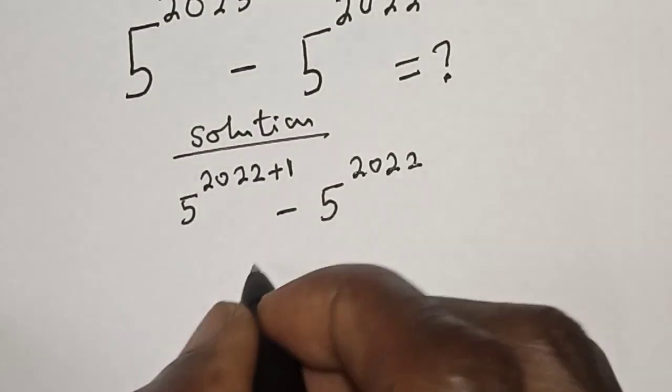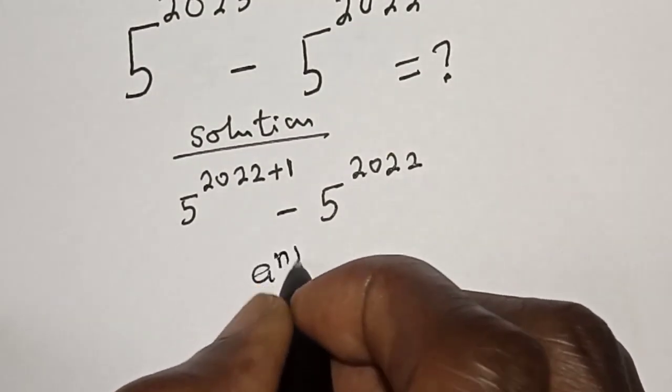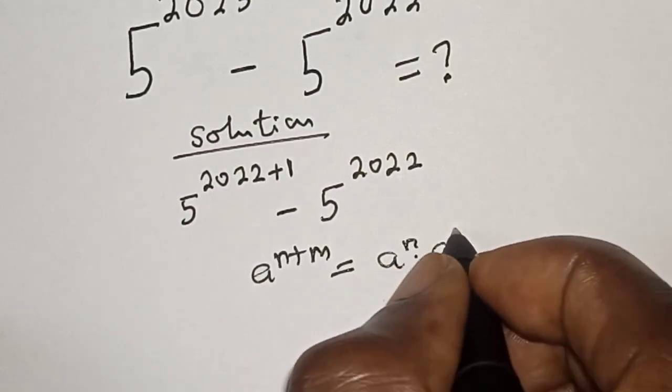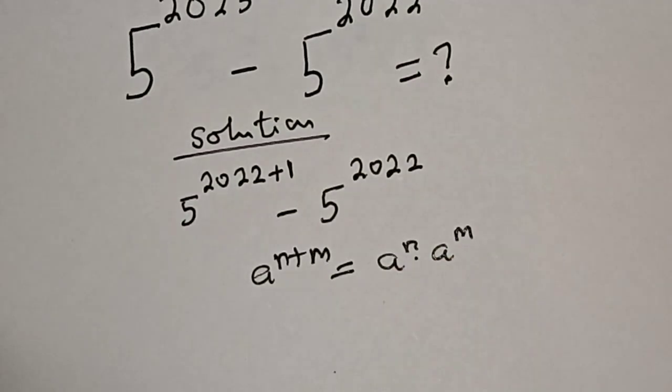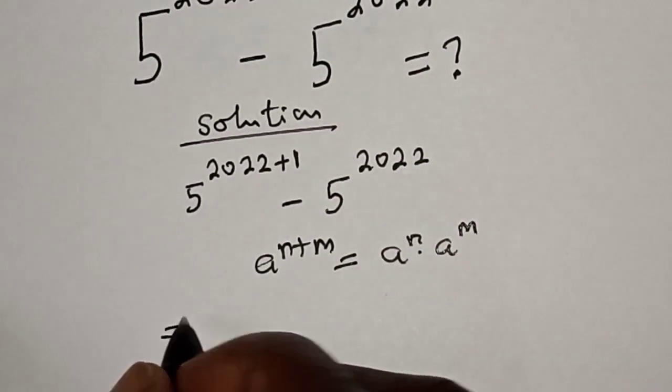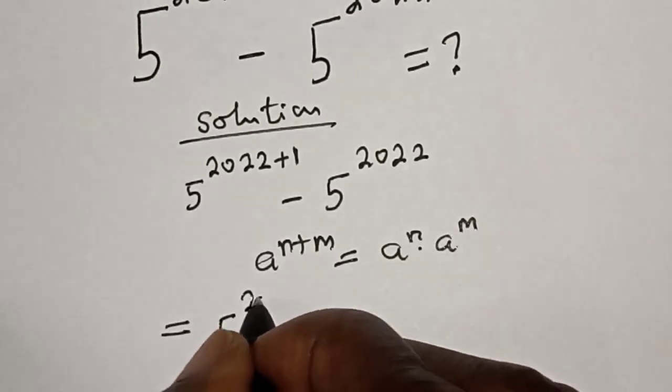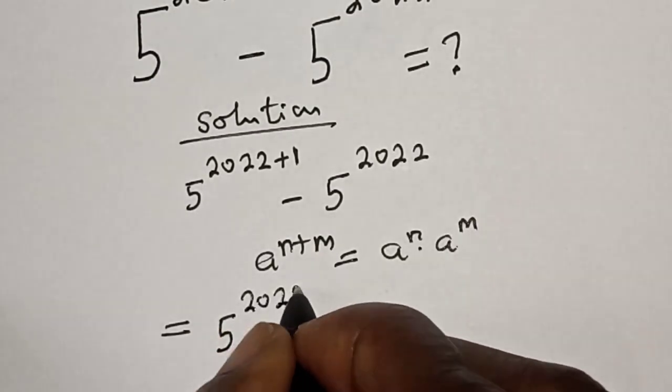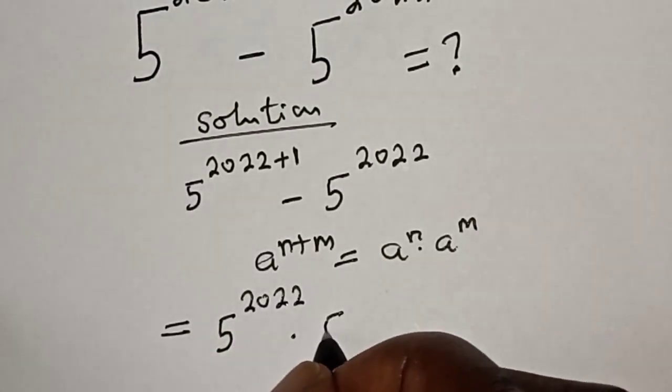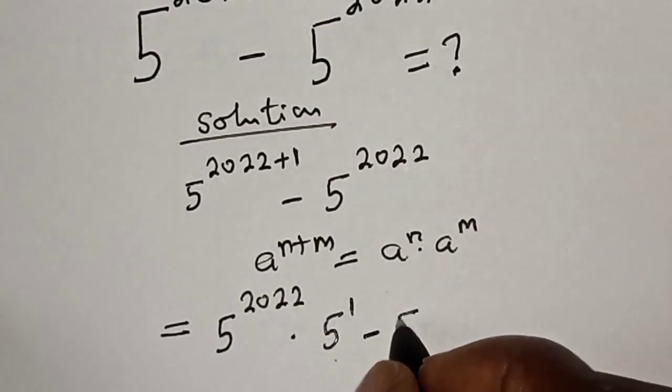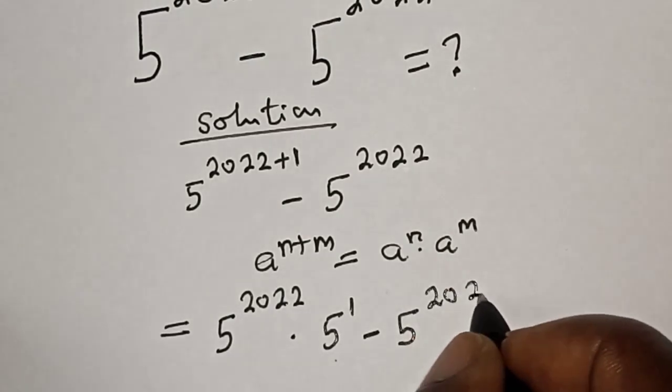Take note of this rule that if you have a raised to power n plus m, this is equal to a raised to power n multiplied by a raised to power m. Then, this is equal to 5 raised to power 2022 multiplied by 5 raised to power 1 minus 5 raised to power 2022.